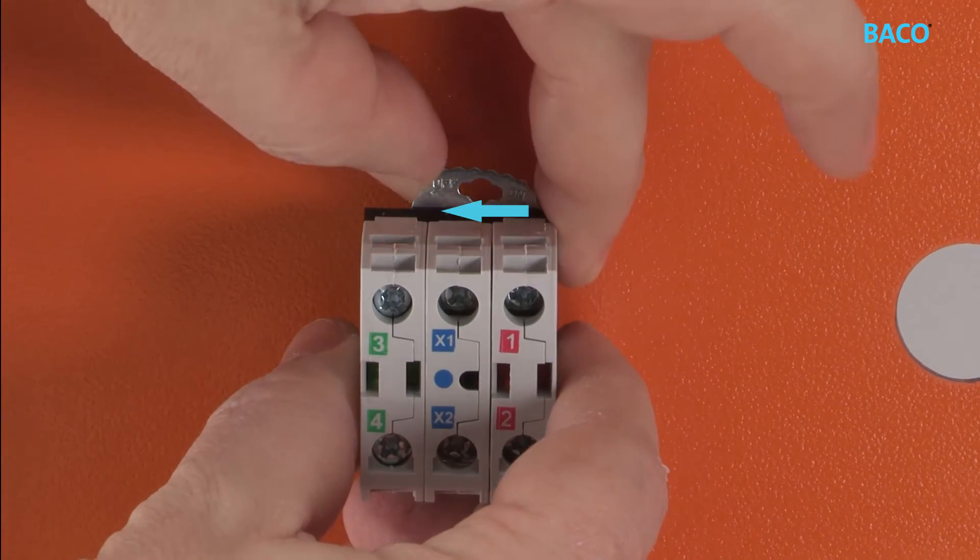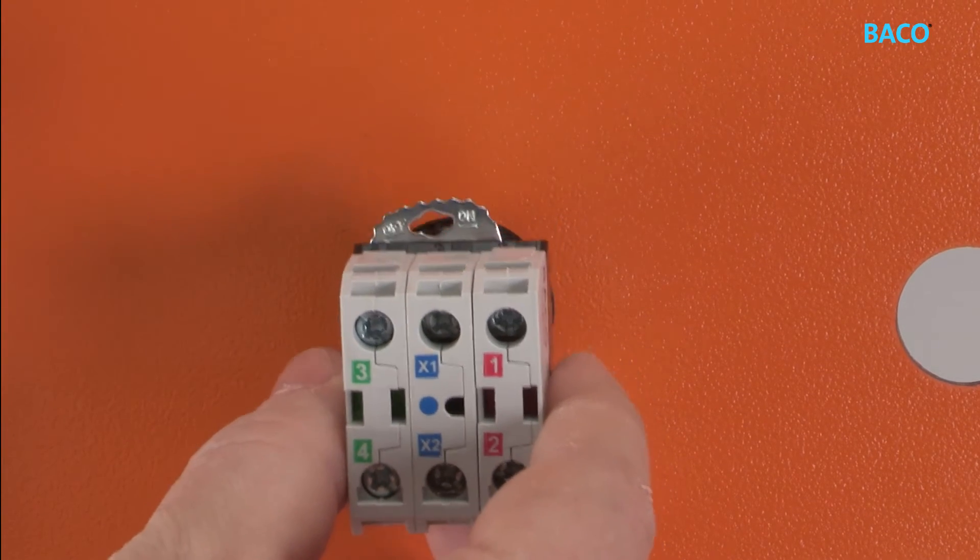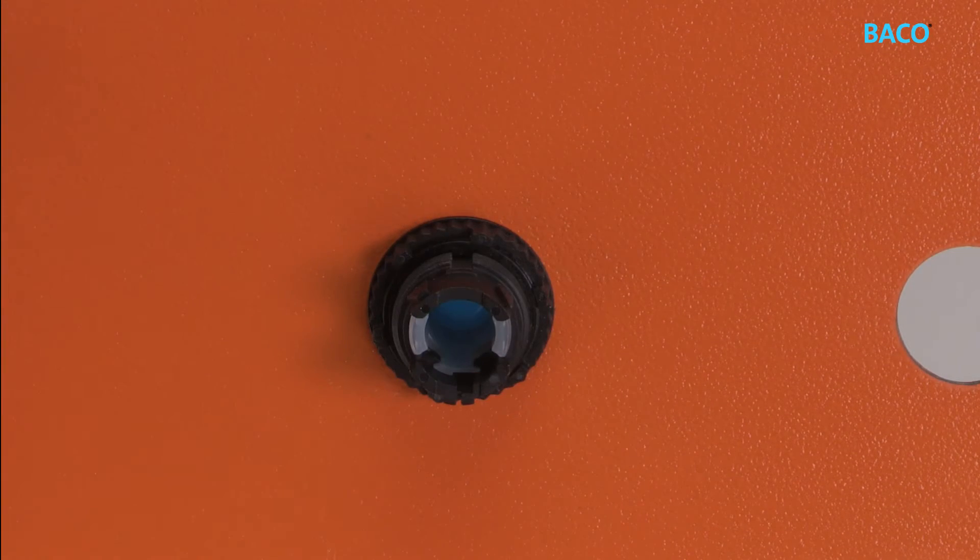To remove the adapter, unlock the latch from the right to the left by hand or using a screwdriver. Then pull back the adapter towards you.